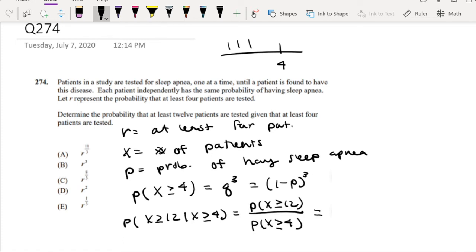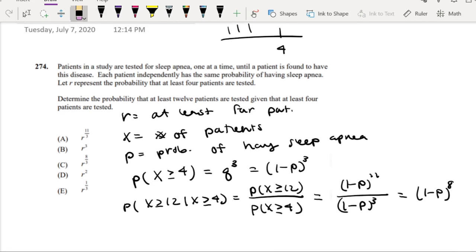And the denominator is just 4. And so this is equal to, kind of the same idea, if there's at least 12 patients that were tested, that means there must have at least been 11 patients who didn't have sleep apnea. So that's equal to 1 minus P to the 11, right? And the denominator we already figured out was 1 minus P to the 3. So this is equal to 1 minus P to the 8, right?